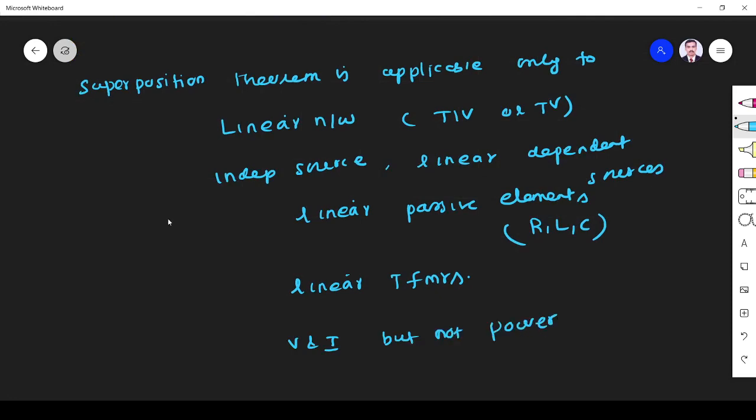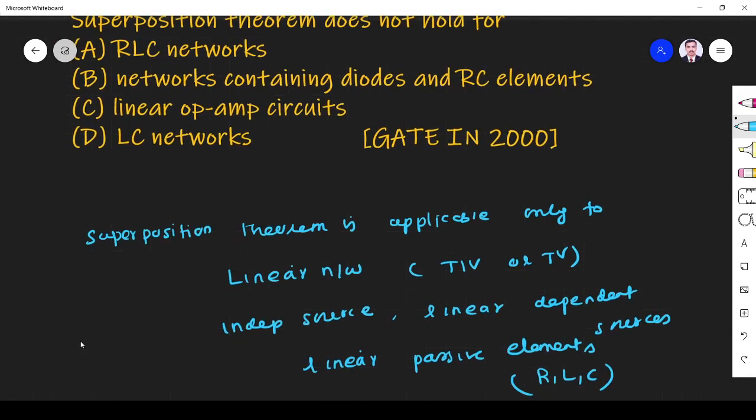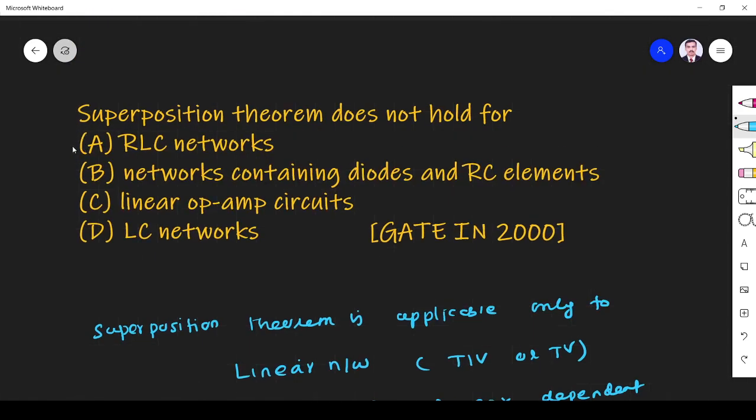The circuit should be a linear network. Option A talks about RLC networks - superposition theorem is applicable to linear passive networks like RLC, so we can apply it there. Similarly for LC networks in option D. So these are not the answer.